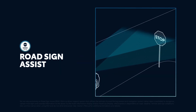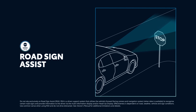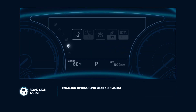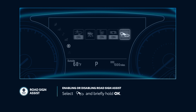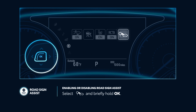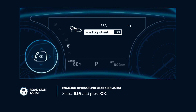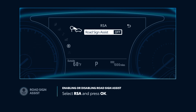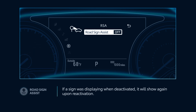Road Sign Assist, or RSA, is designed to detect speed limit, stop, do not enter, and yield signs, and then display them on the MID. To enable or disable this system, select the Settings menu, then enter the RSA menu by selecting it and pressing OK. Now select RSA and press OK to toggle the setting on or off. Please note that if a sign was displaying when the system was deactivated, it will still be shown upon reactivation.